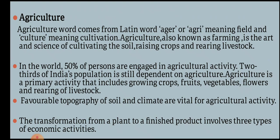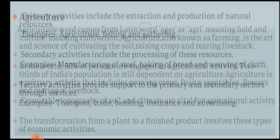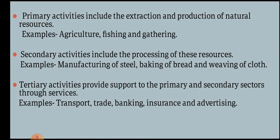The transformation from a plant to a finished product involves three types of economic activities. The first is called primary activity. Primary activities include extraction and production of natural resources. It includes agriculture, fishing, and gathering.